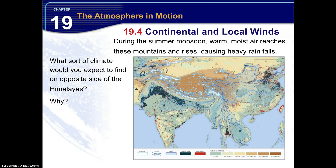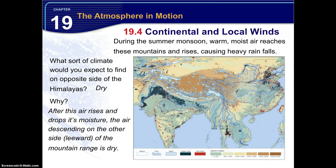During the summer monsoon, warm moist air reaches the mountains and rises, causing heavy rainfalls. What sort of climate would you expect to find on the opposite side of the Himalayas from these rainfalls? Very dry. After this air rises and drops its moisture, the air descending on the other side of the mountain — the leeward side — would be very dry. So the windward side has moist, high vegetation, and heavy rains during the summer monsoon season, while the leeward side is very dry.